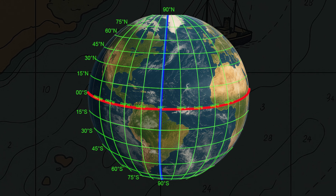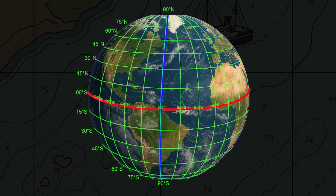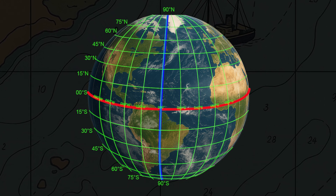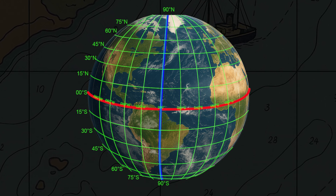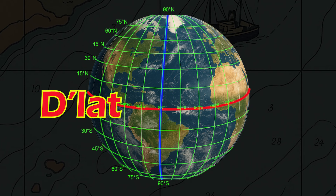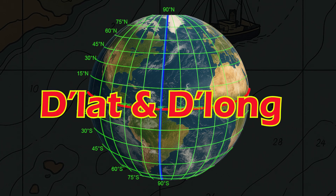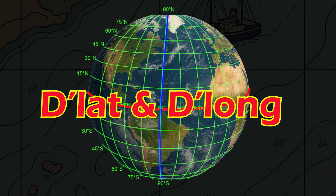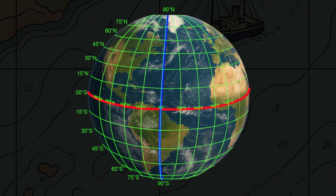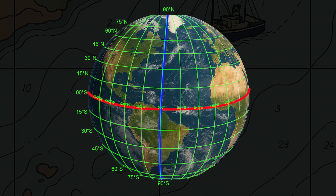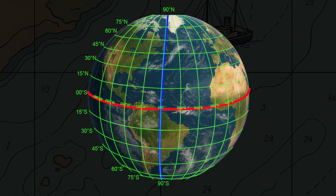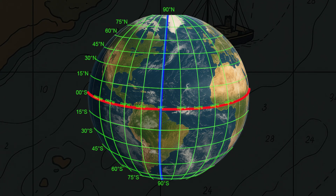Welcome back to the channel. Today, we'll learn how to determine the difference in latitude or D-lat, and the difference in longitude or D-long. But before we do that, let's first understand two important reference lines: the equator and the prime meridian.